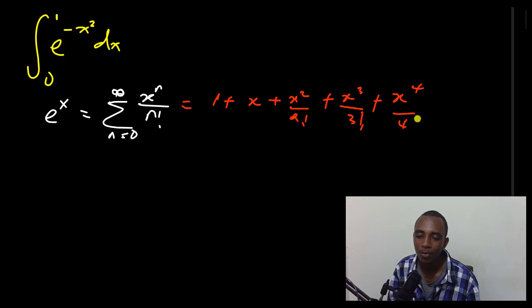When n is 4, x to the power 4 over 4 factorial, and so on. And the more terms you write out, the better the function is, the better the approximation, or the more accurate.